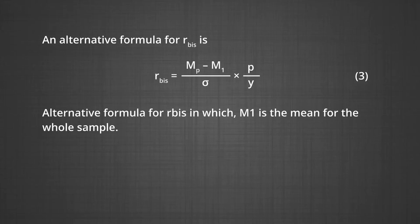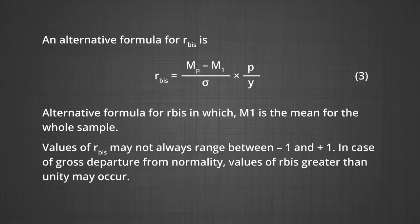Substituting values in the formula: R_bis = (60.9 - 59.5) / (17.63 × (0.25 × 0.75 / 0.318)) = 0.047. The correlation is negligible. There is an alternative formula: R_bis = (M_P - M_t) / (σ_t × (p/y)). Values of R biserial may not always range between -1 and +1. In case of gross departure from normality, values greater than unity may occur.